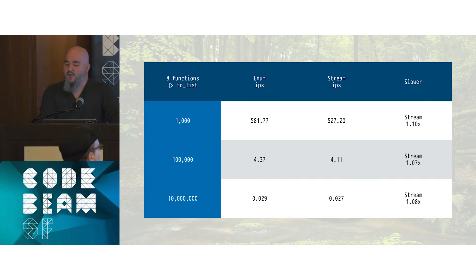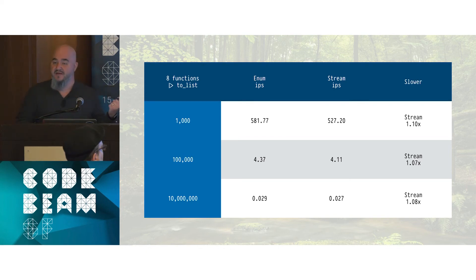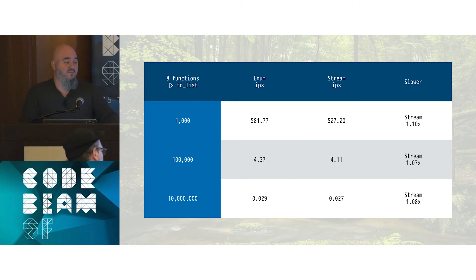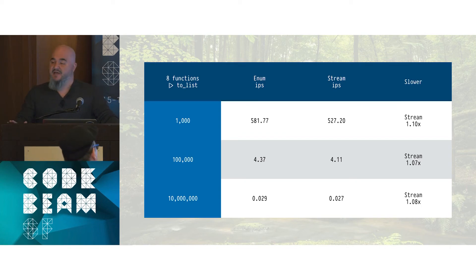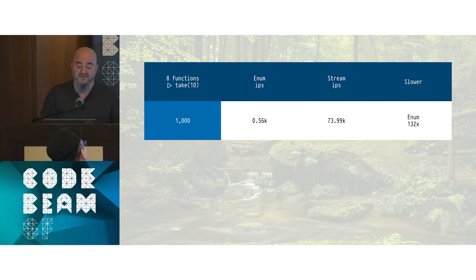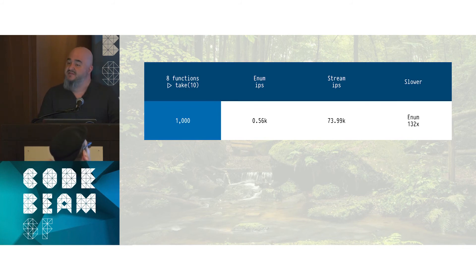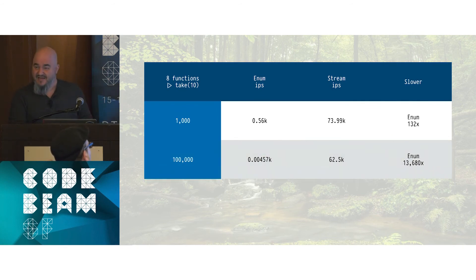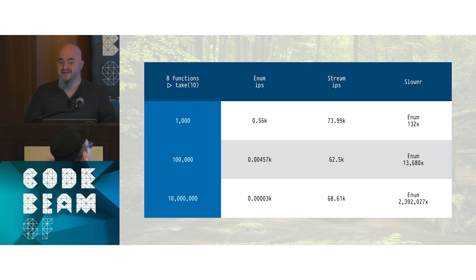Why is Stream sometimes slower than Enum? When you have Enum, it doesn't have to set up all the structure that Stream sets up. Creating that lazy data structure takes some computational power and memory. But now with eight functions ending in Enum.take(10) instead of Enum.to_list: for 1,000 items, Enum is 132 times slower than Stream. For 100,000 items, Enum is 13,000 times slower. For 10 million items, Enum is almost 2.4 million times slower than Stream — because Stream doesn't have to hold the whole list in memory and operate on each item.